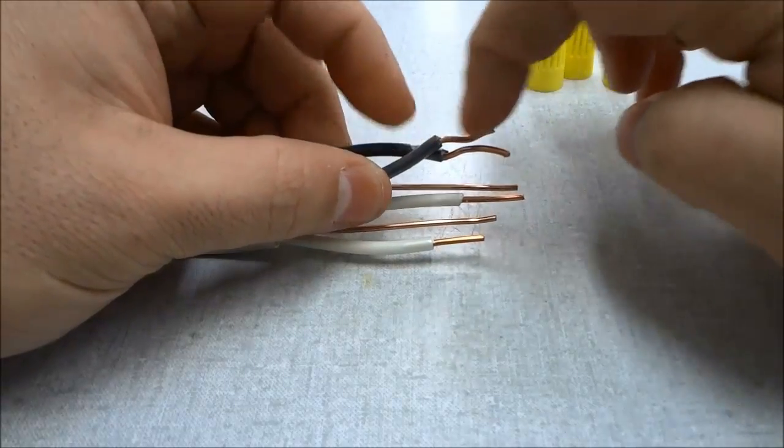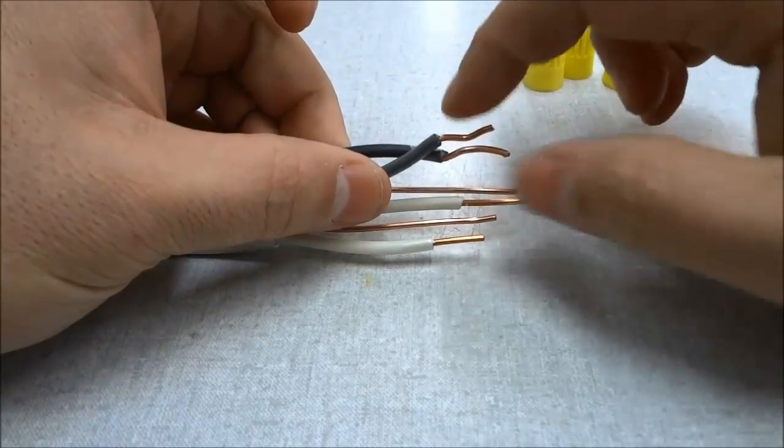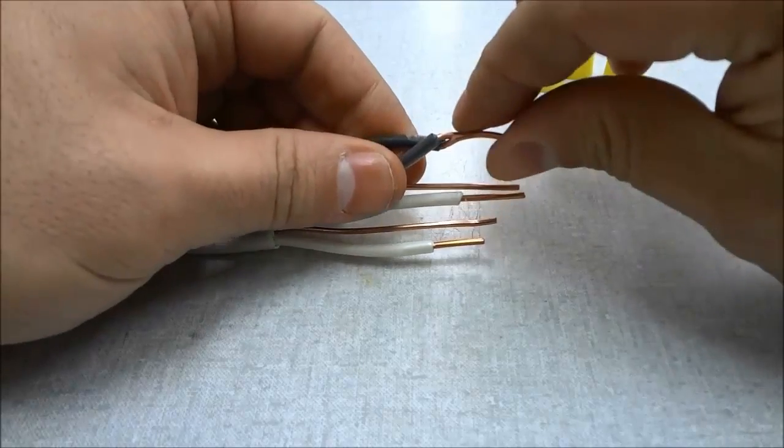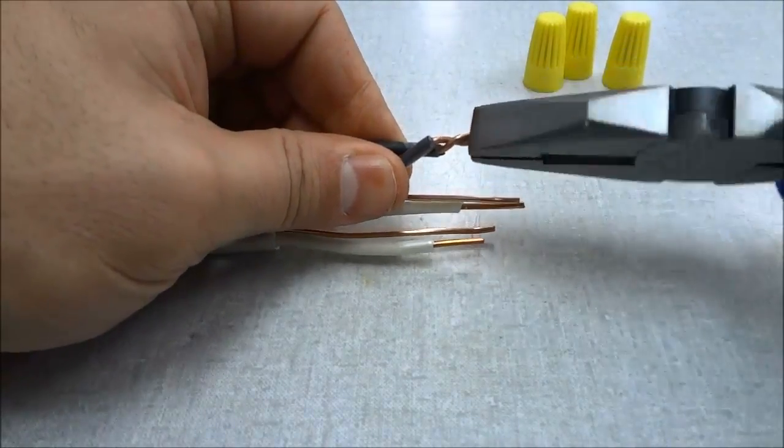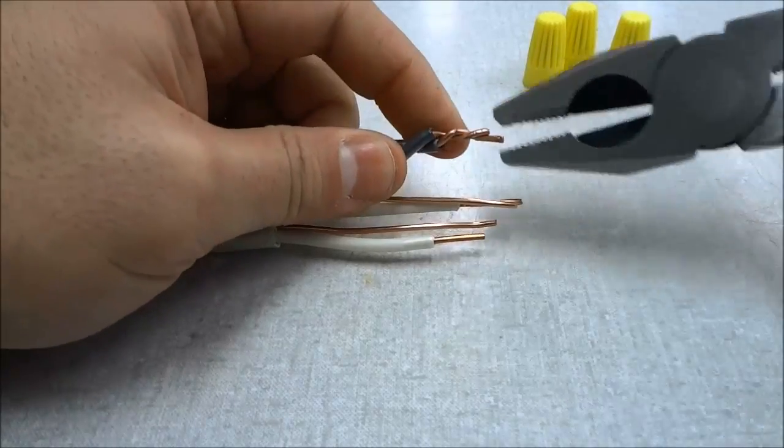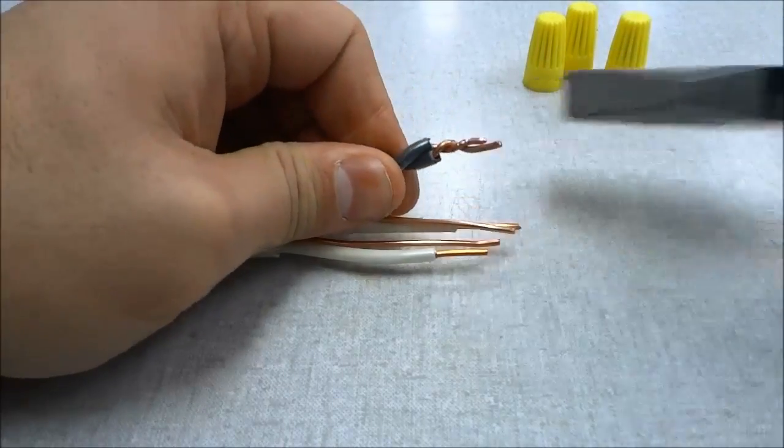Make sure you have enough of the actual wire, and we are going to place them together. Then you are going to get a pair of pliers and simply twist them in a clockwise motion.